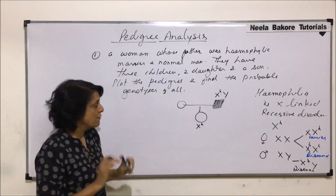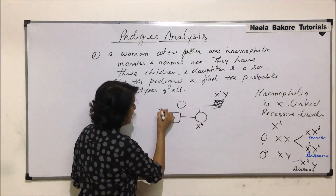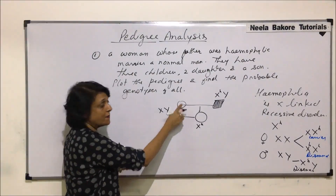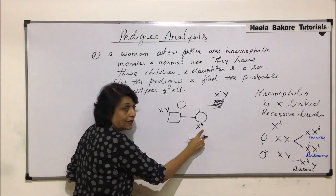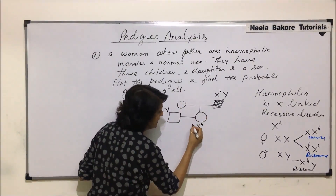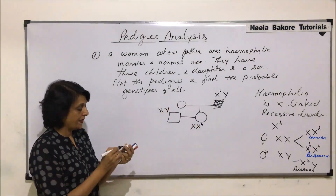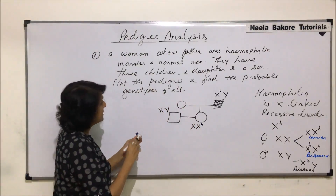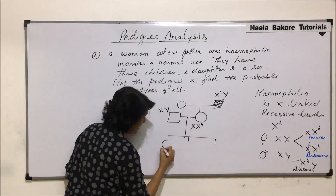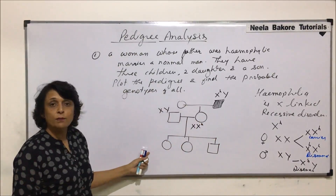She marries a normal man, whose genotype is X Y. Since nothing is mentioned about the woman's mother having any disease, we take her other X as normal dominant. This indicates that our starting woman is a carrier. This couple then has two daughters and a son, and we have plotted the pedigree.